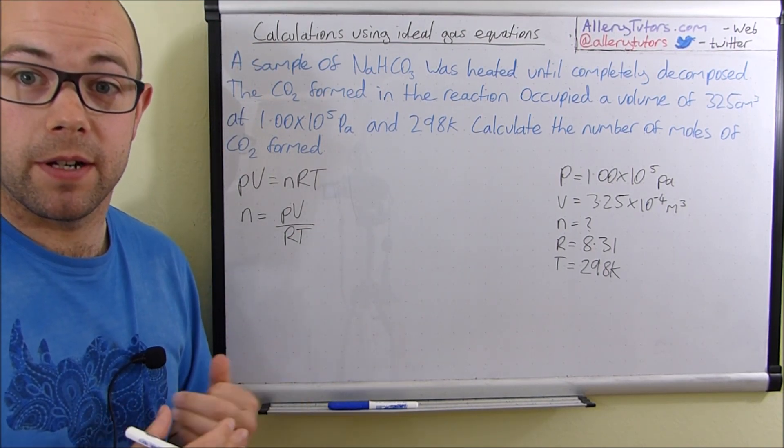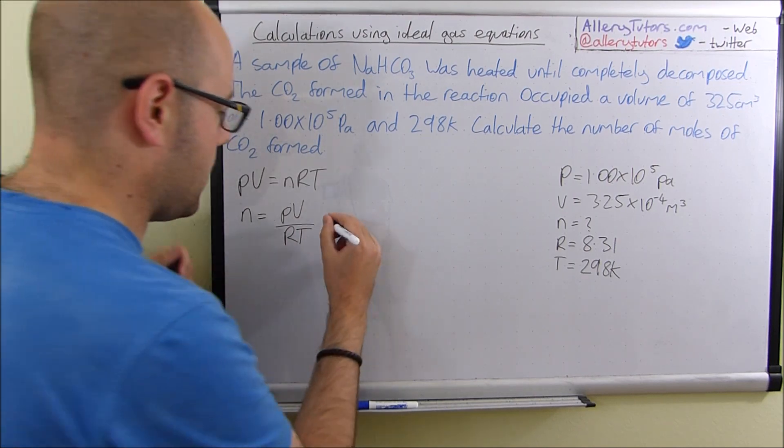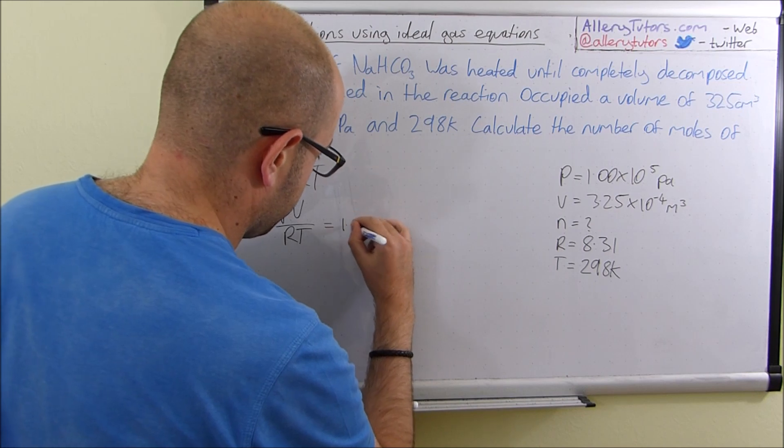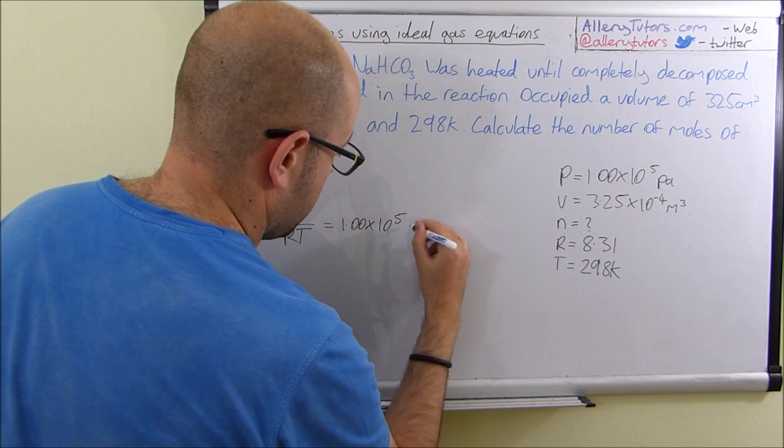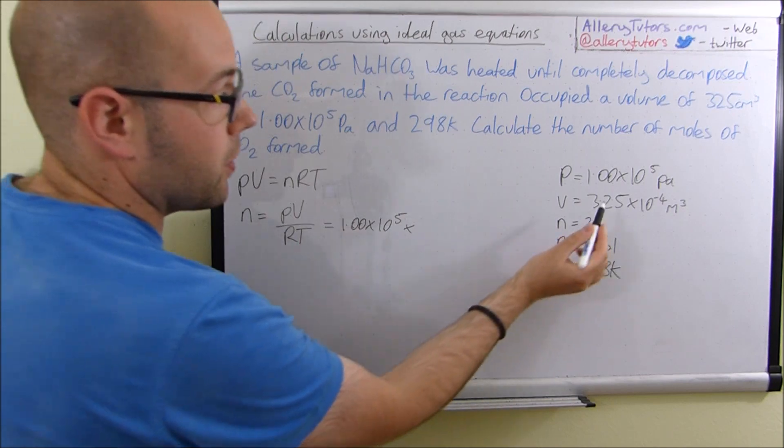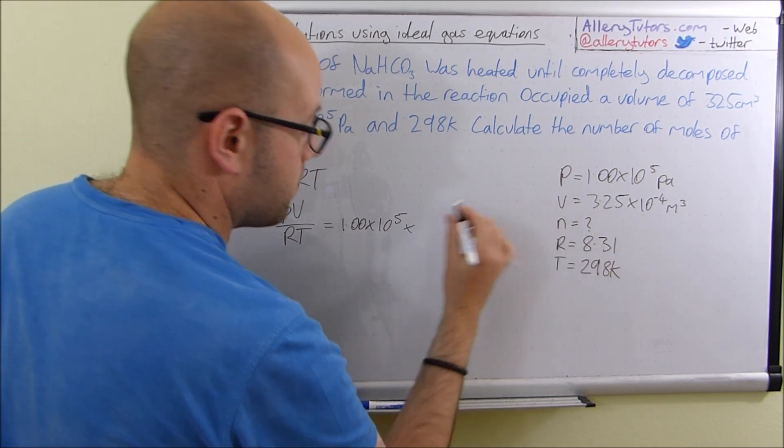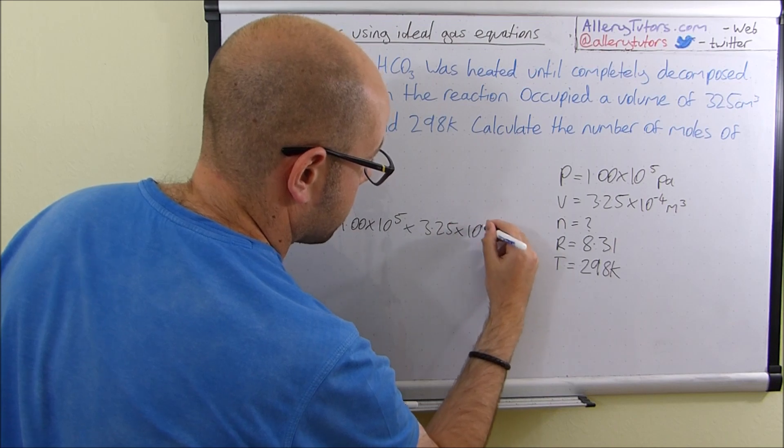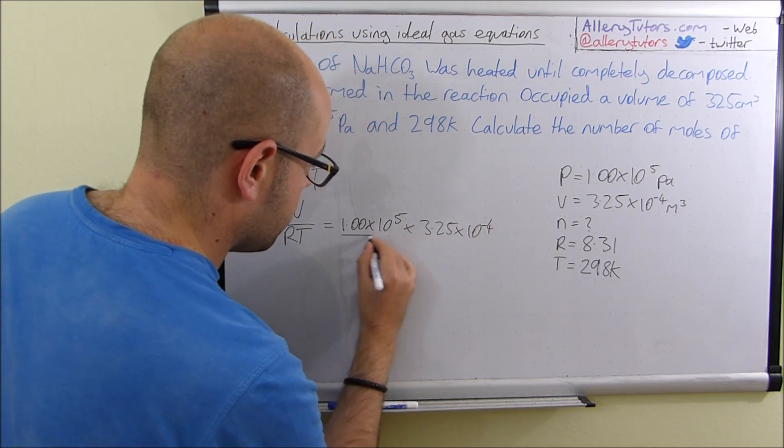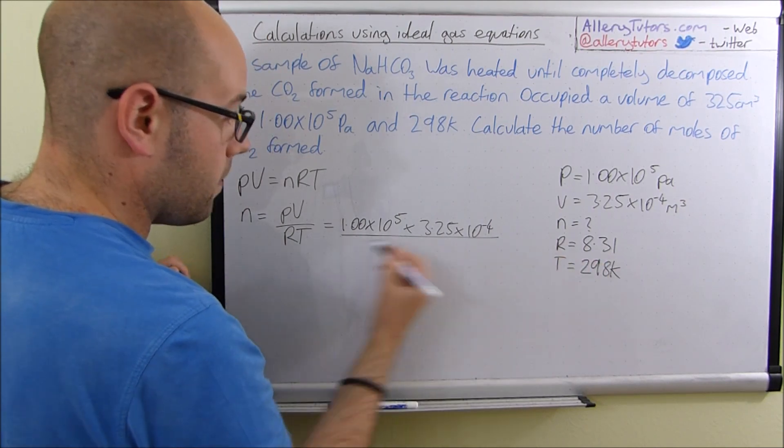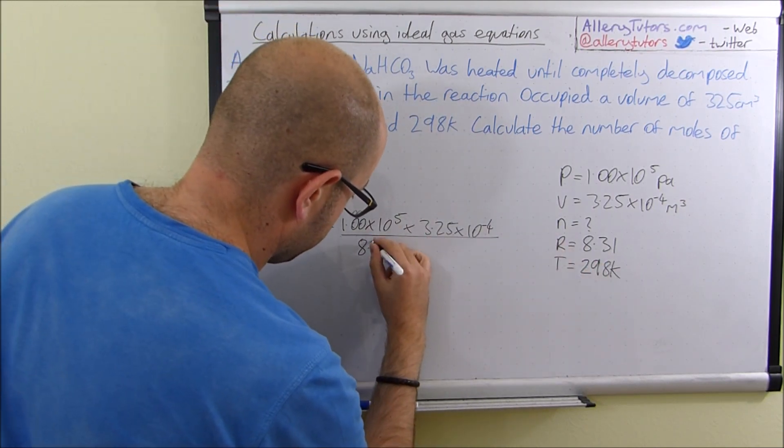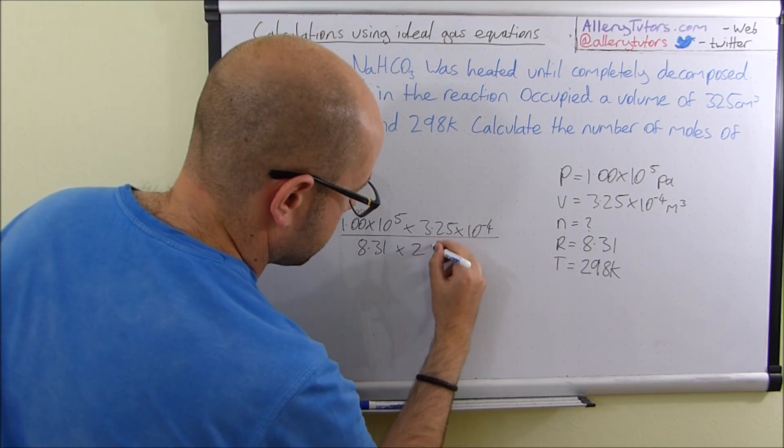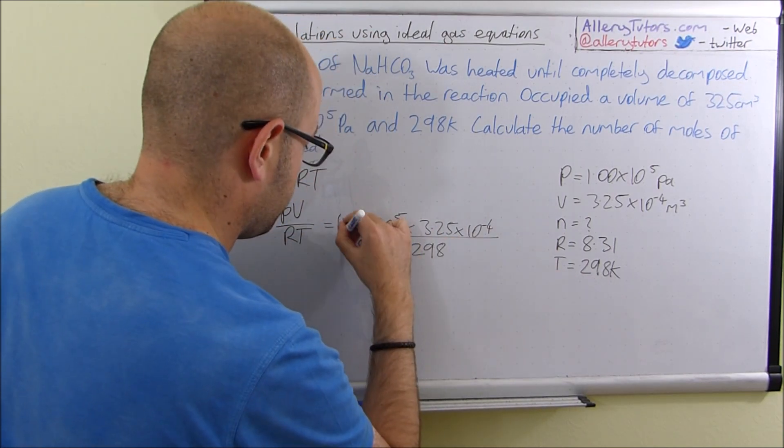And then all we have to do is put the numbers in. So the pressure, we worked out as 1 times 10 to the 5. And we're going to multiply that by the volume, which is 3.25 times by 10 to the minus 4. Divide all of that by R, which is 8.31. And we're going to multiply that by 298, because that's the temperature. Put that in brackets.